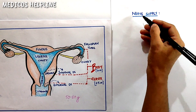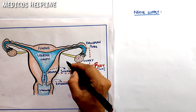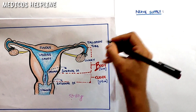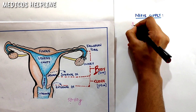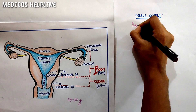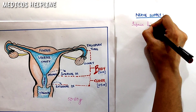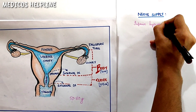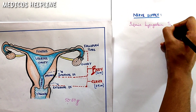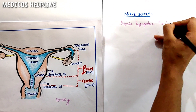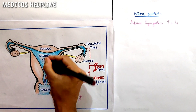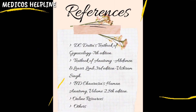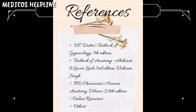The nerve supply of the uterus is obtained from the inferior hypogastric plexus, specifically from T10 to L1, which supplies the uterus. And here we have come to the end of the video.